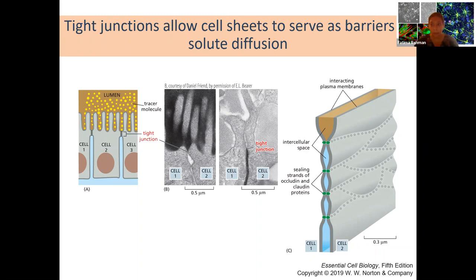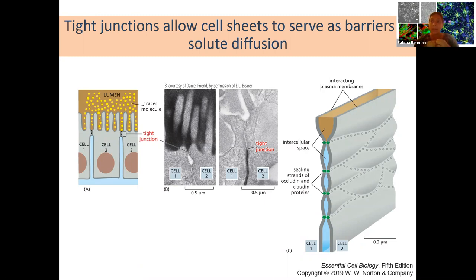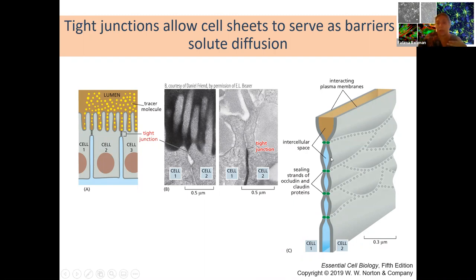Tight junctions join cells together and seal them so that while there is some intercellular movement within these spaces, it is not spread all along the cells—it remains in that tight junction space. The proteins occludin and claudin are in the plasma membrane sealing cells together, like double-sided tape placed at various intervals. There will be some movement of cytoplasmic molecules in these little spaces at higher concentration, but the rest of the cell is protected.